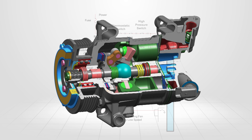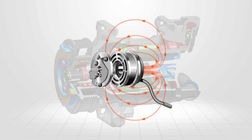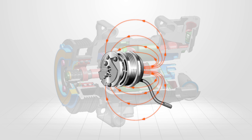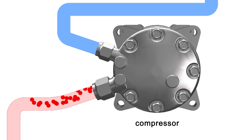The clutch coil doesn't rotate when the AC system is in operation. The pulley assembly is magnetized by the stationary coil on the compressor body. This engages the clutch to the clutch hub attached to the compressor shaft, creating refrigerant flow within the system.